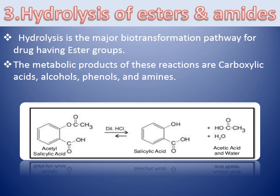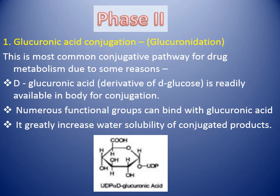Coming to the third part of phase 1 reaction, that is hydrolysis of esters and amides. Hydrolysis is the major biotransformation pathway for drugs having ester groups. The enzyme for this kind of bioconversion is found in liver, kidney, and intestine. The metabolic products of these reactions are carboxylic acids, alcohols, phenols, and amines. The metabolic products are more polar and can conjugate with glucuronic acid for further excretion. For example, aspirin has a COOH group which gets hydrolyzed to salicylic acid and acetic acid, both containing COOH groups; some of the acetic acid gets directly eliminated through urine.